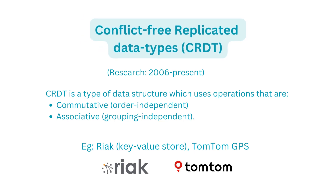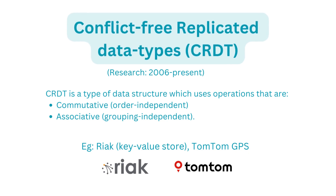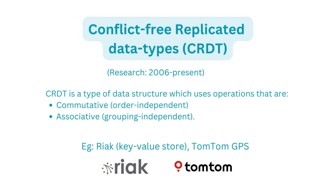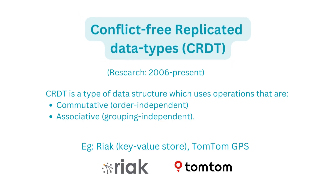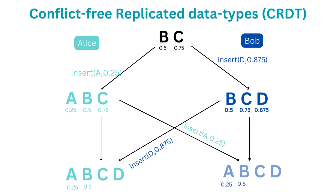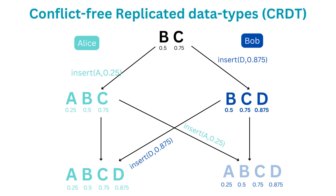Since CRDT is a data structure rather than a single algorithm, many algorithms can be used to achieve the same result. A very common way is using fractional indexes. In the same Alice/Bob example, instead of integer indexes (0, 1), we use fractional indexes: B is assigned 0.5 and C is assigned 0.75. The entire document is treated as lying on a number line between 0 and 1, and every character is assigned a fractional index within that range.